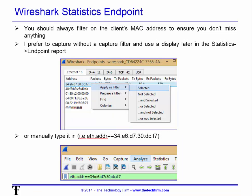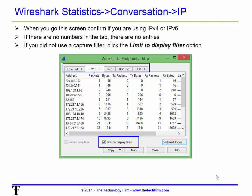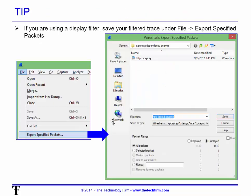If you decide to capture packets, we're talking about Wireshark. When you capture packets, in most cases I strongly suggest you do not use a capture filter, because you don't know if it's IPv6 or IPv4 — just leave it wide open. Afterwards, use a display filter. The best way is: Statistics > Endpoint report, find your MAC address, right-click, apply as filter. Or if you're comfortable, type the syntax directly in the display filter bar. When you use reports like the endpoint report, make sure you click 'Limit to display filter' to get only your traffic. My preferred approach is to save the trace file filtered — so I have my original trace file, then save as filtered.